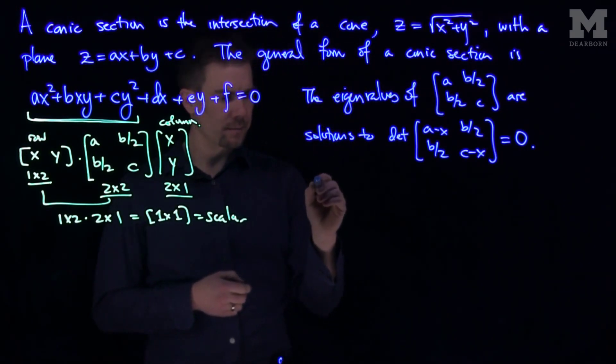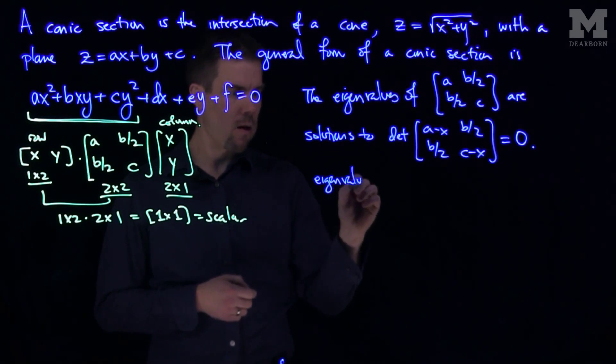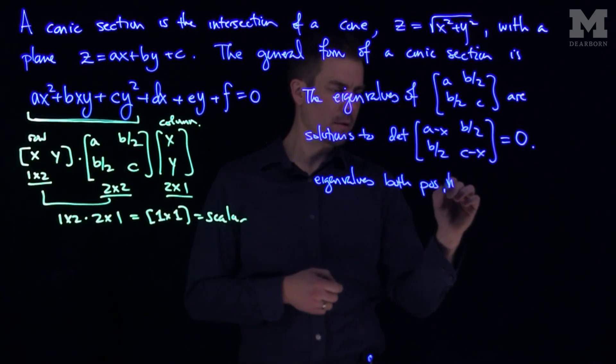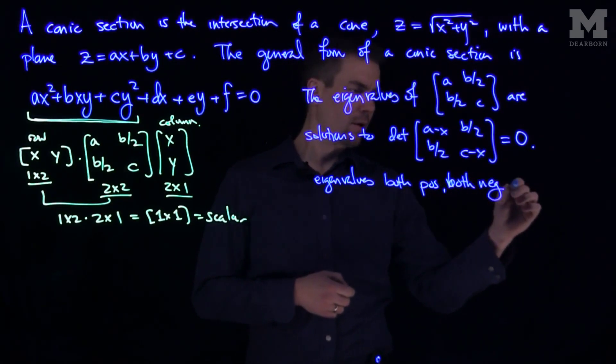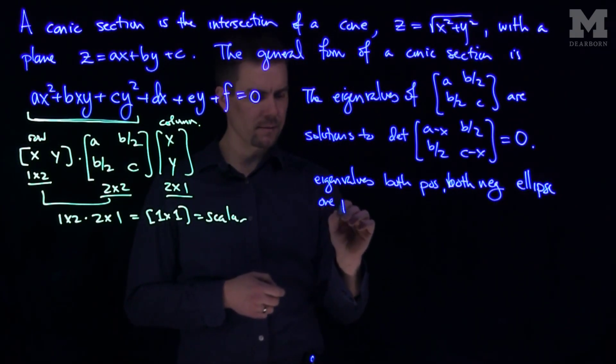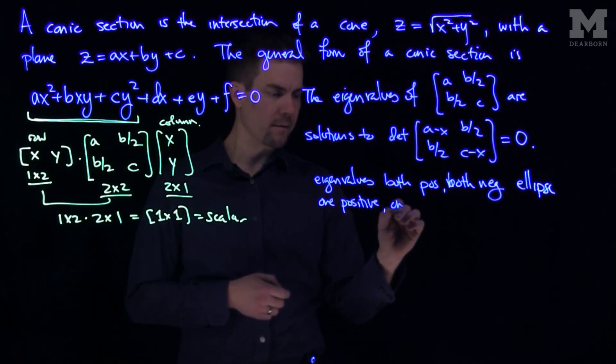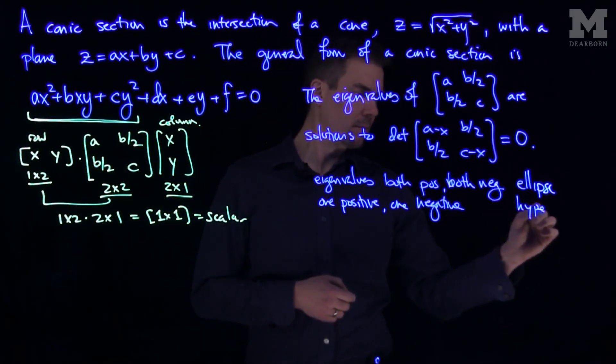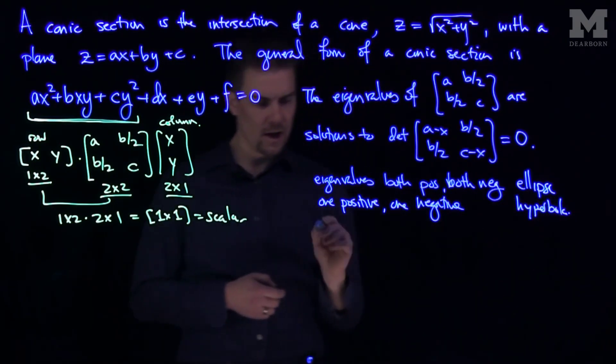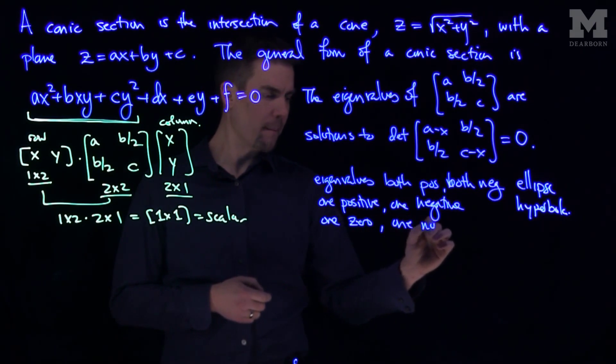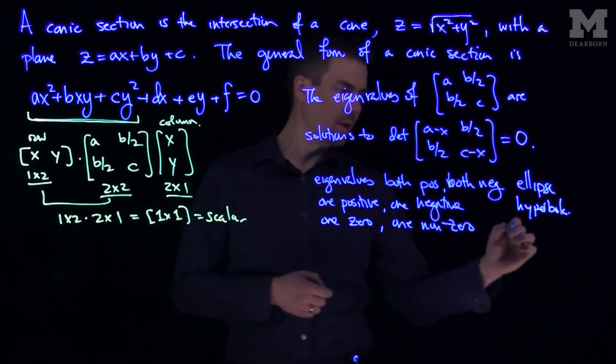If the eigenvalues are both positive or both negative, you have an ellipse. If one is positive and one negative, that implies you have a hyperbola, and one zero and one non-zero implies that you have a parabola.